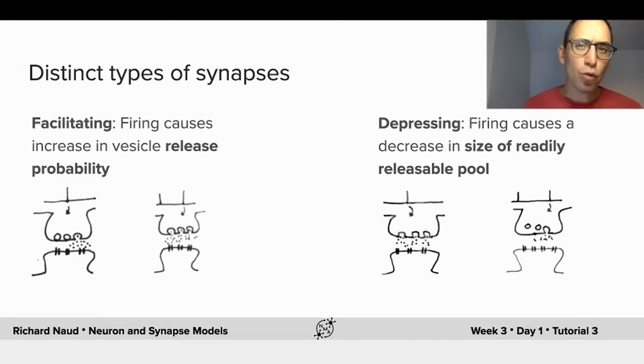Now, synapses are super complicated, and there are many ways with which they can create short-term dynamics, and there are multiple kinds of short-term dynamics. But the main ones are described here.